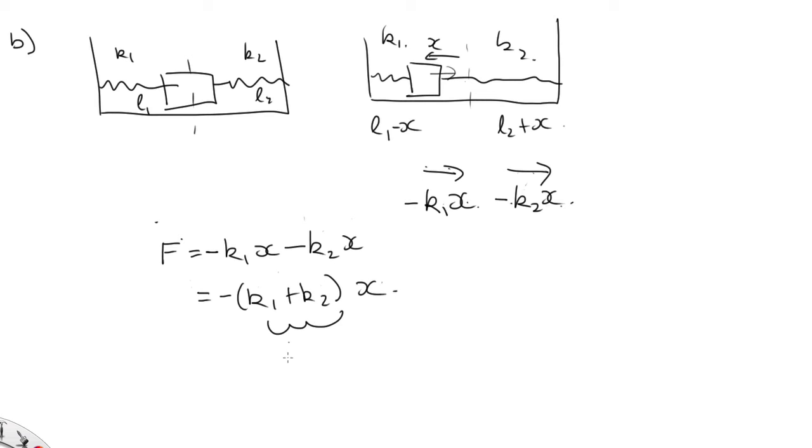So this is our effective k. And so our period is equal to 2 pi root m over k effective, which is k1 plus k2. So that's the end of that lecture.